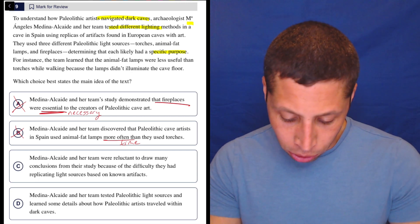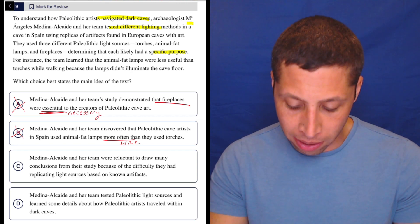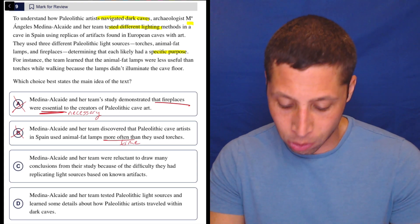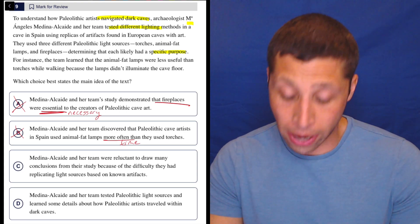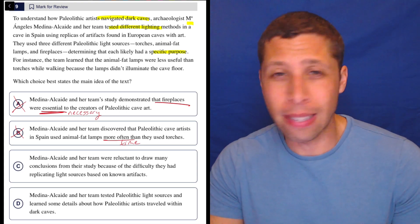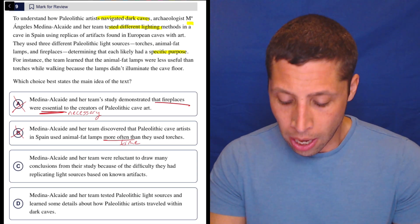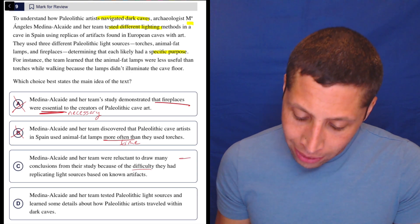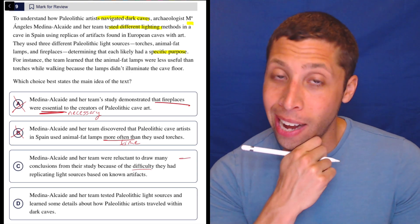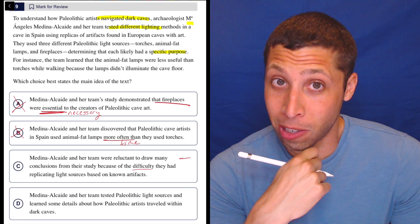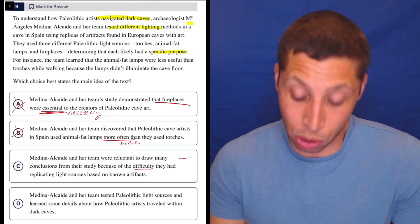See, these people were reluctant to draw many conclusions from their study because of the difficulty they had replicating light sources based on known artifacts. Well, this is tempting, right? It's not taking a stand. It's not saying that one was better or worse than the others. I'm a little bit bothered by the word difficulty. That's very negative, and I don't have a negative connotation to this passage, right? It was much more neutral.